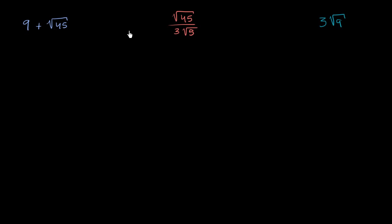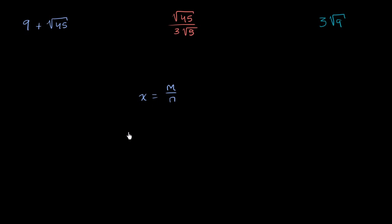Let's think about whether each of these expressions produce rational or irrational numbers. As a reminder, a rational number is one that can be expressed as the ratio of two integers, m and n. If you have an irrational number, this cannot happen. So let's think about each of these.